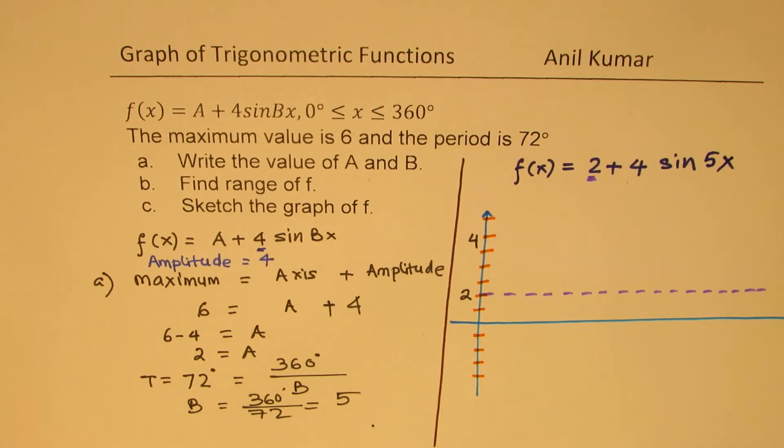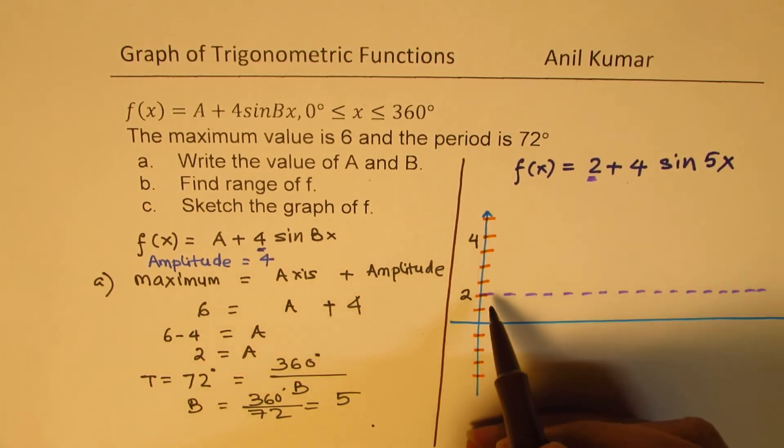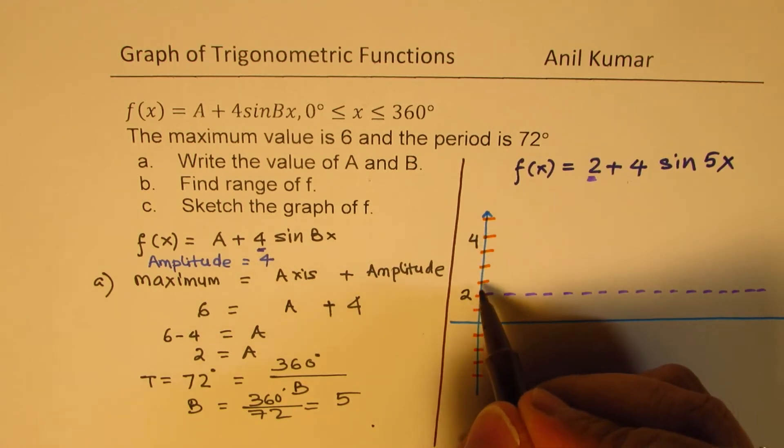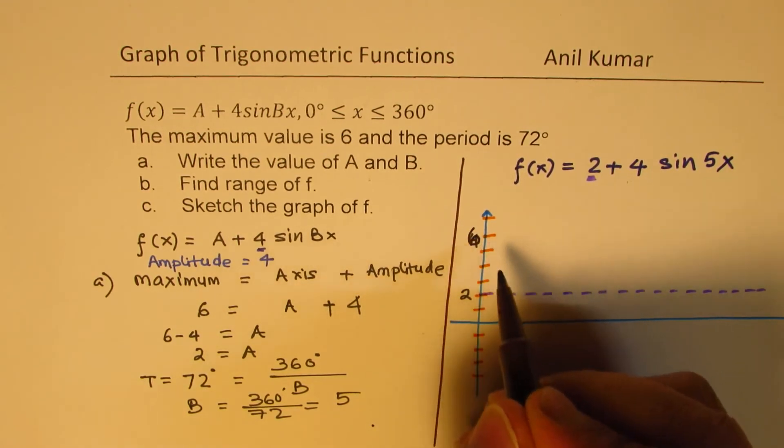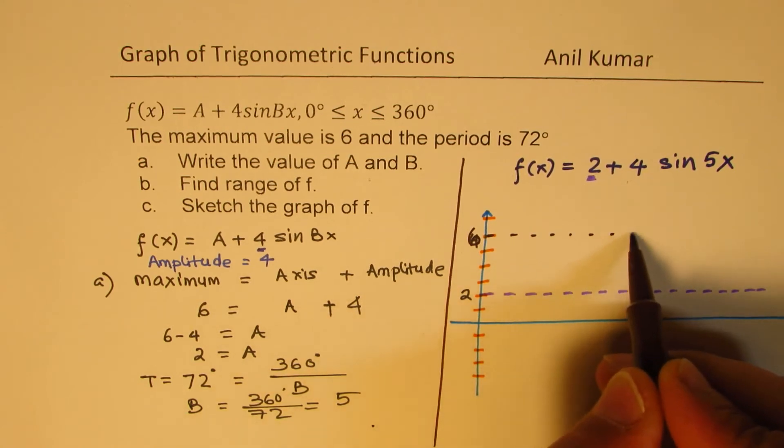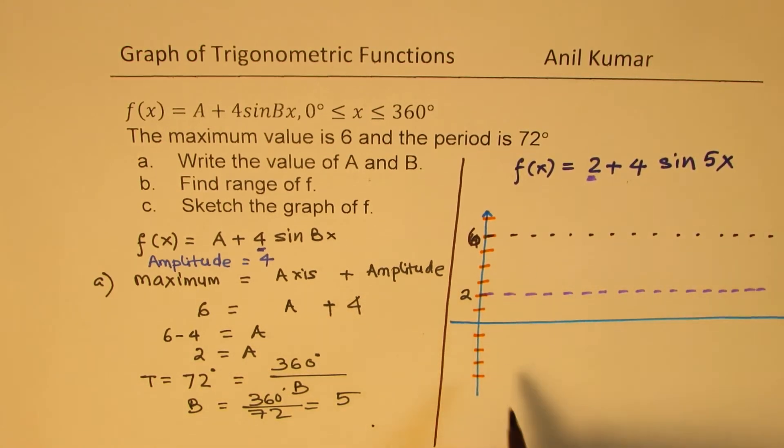So, let me sketch a dotted line there, just to indicate that we have to go up to, so 2, 3, 4, 5, 6, that, I should have written 6 there. So, I'm just, that is corresponding to our maximum.